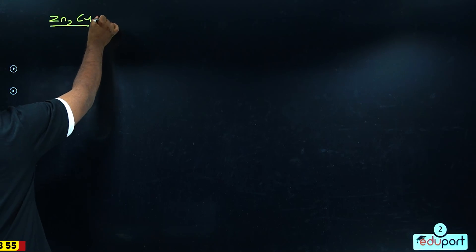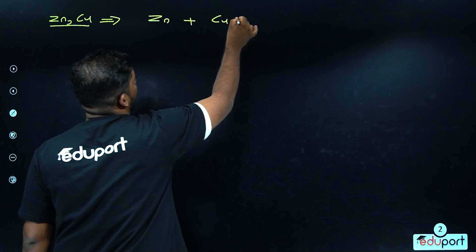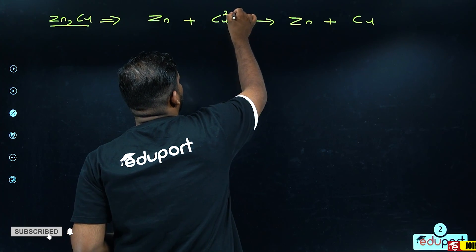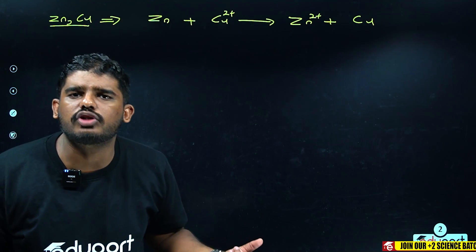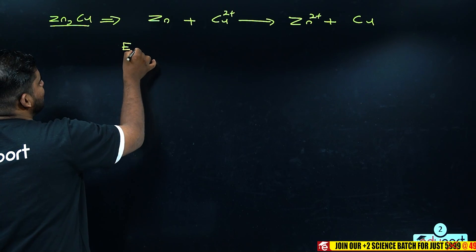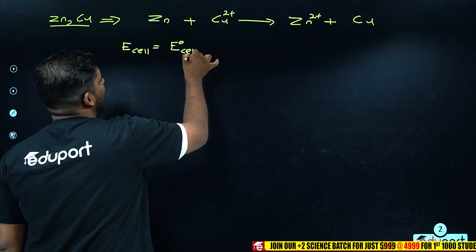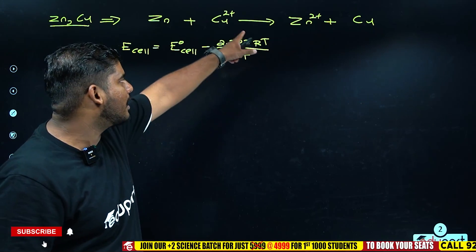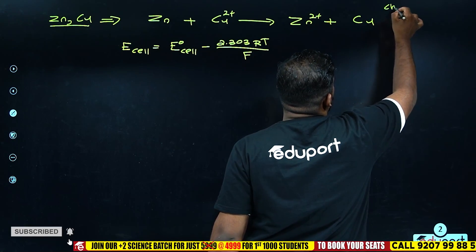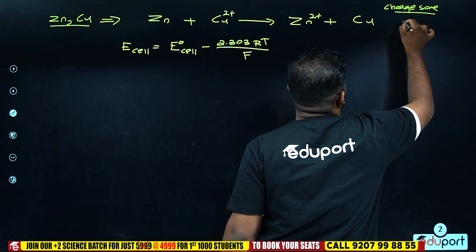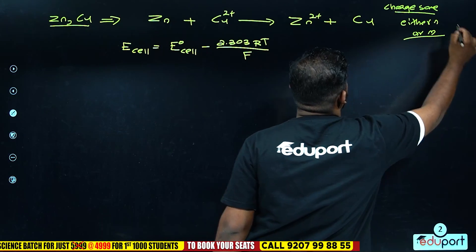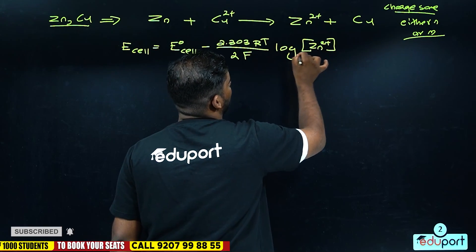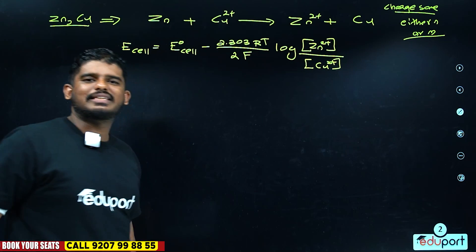For example, take zinc and copper. Zinc is more reactive, so the equation is: Zn plus Cu²⁺ gives Zn²⁺ plus Cu. The charge of zinc is 2-plus and copper is 2-plus, so n equals m equals 2. The Nernst equation becomes: E_cell equals E°_cell minus 2.303RT over 2F into log of concentration of Zn²⁺ raised to 1 divided by concentration of Cu²⁺. This is the Nernst equation for the Daniel cell.